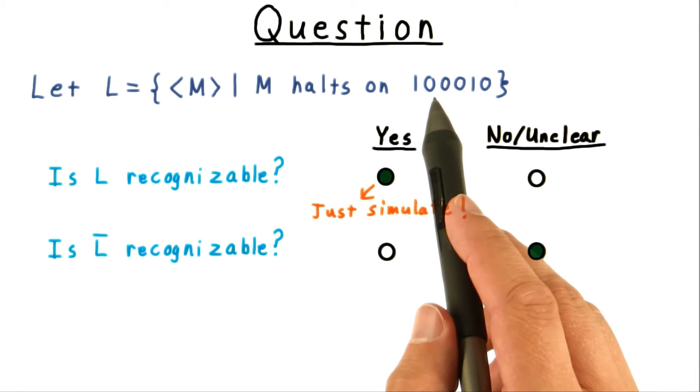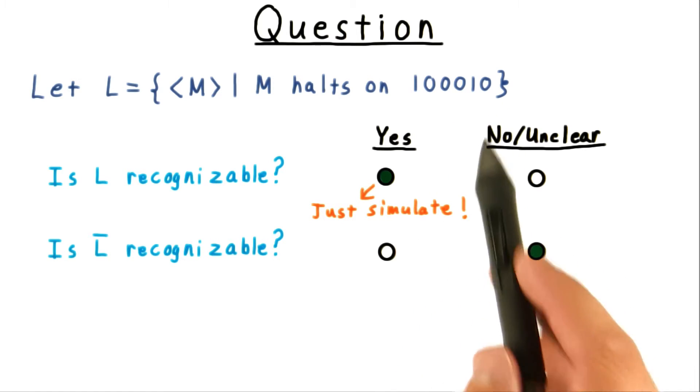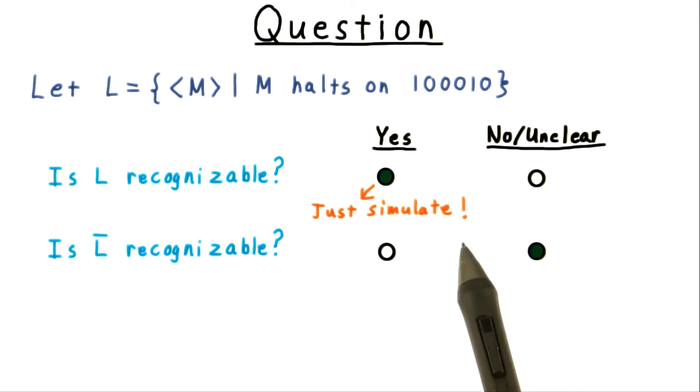It just feeds the input 1, 0, 0, 0, 1, 0 into M and then accepts after M halts.